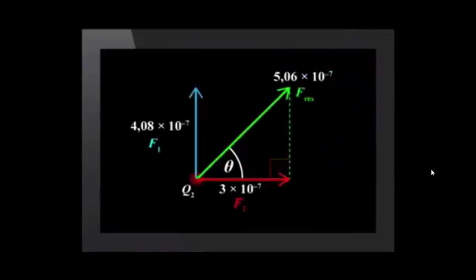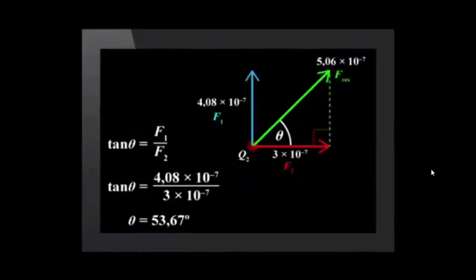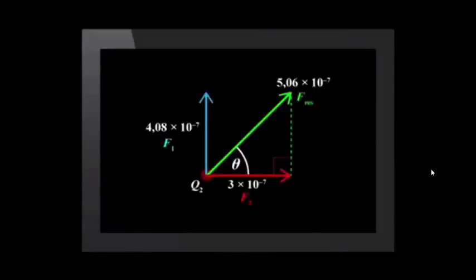Then we calculate the direction of the resultant force. Let us choose the angle between F2 and the resultant. We use the trig function tan to solve for theta. Use the second function tan button on your calculator to solve for the angle. Theta works out to be 53.67 degrees, so the resultant force on Q2 is at 53.67 degrees to the horizontal force.